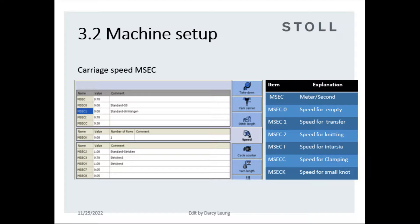MSEC 1 is transfer speed. MSEC 2 is knitting speed. MSEC I is speed on intarsia. MSEC CC is clamping speed. MSEC K is for small knots. You can add MSEC menu on MDV before central processing and modify and adjust speed values in the MSEC menu.